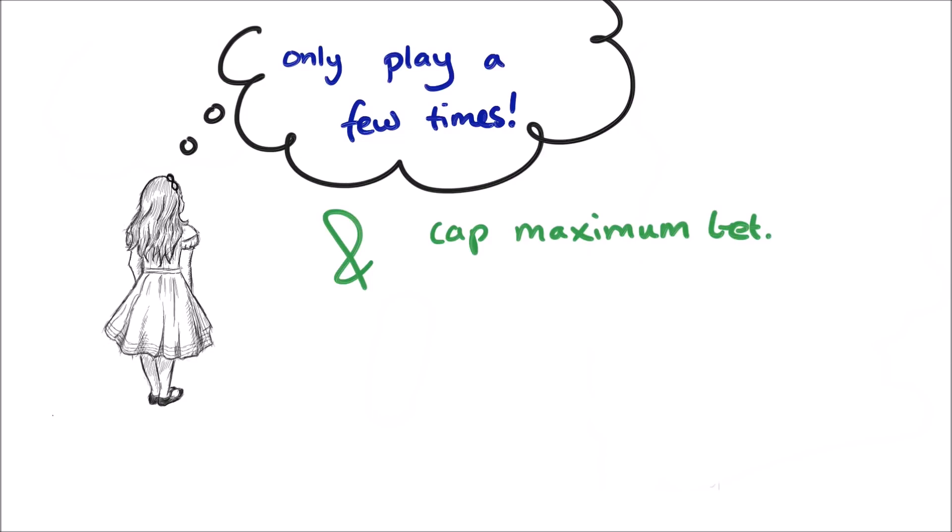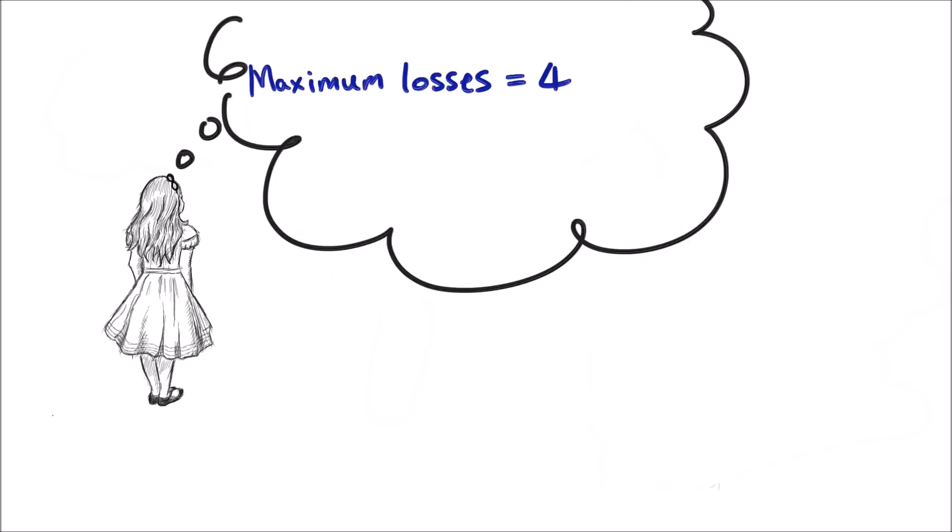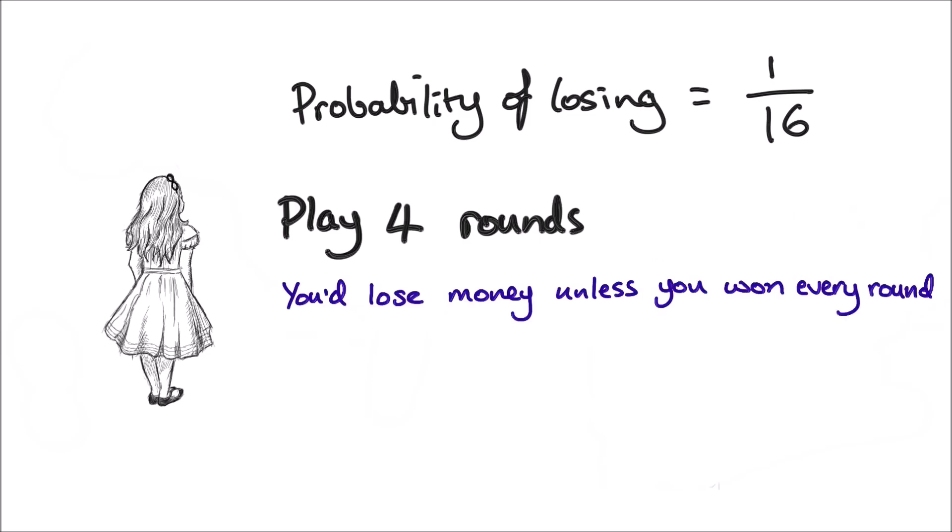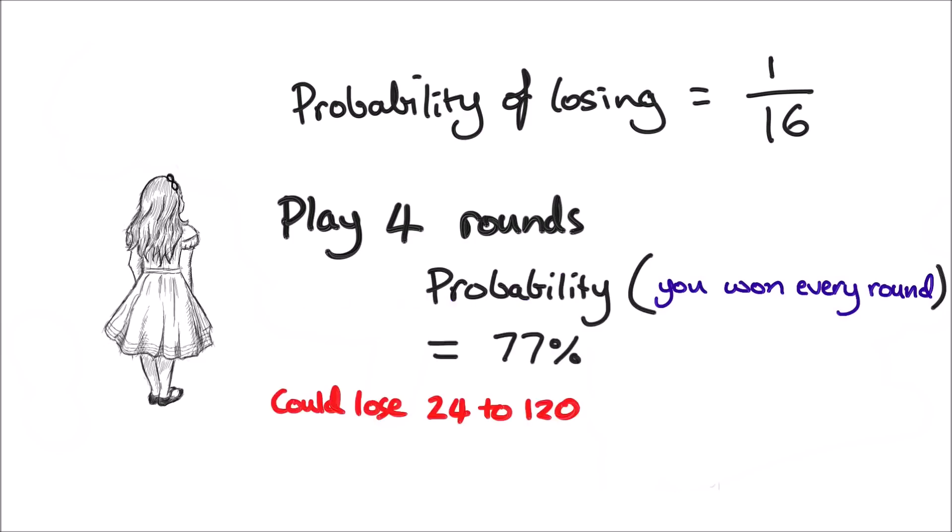Even though it does mean you'll lose more often, let's try an example. Say you set your maximum times of losing at four. The probability of losing any one round then is just one in sixteen, so you'd think you'd be pretty safe if you only played a small number of rounds compared to sixteen. But the thing is, you'd lose money unless you won every single one of those rounds, but the probability of that is only around 77%.